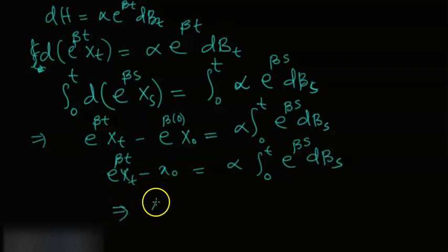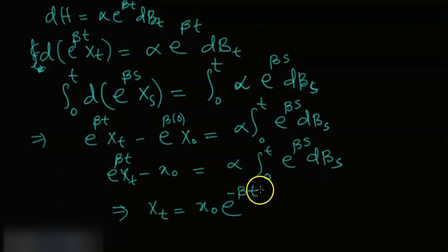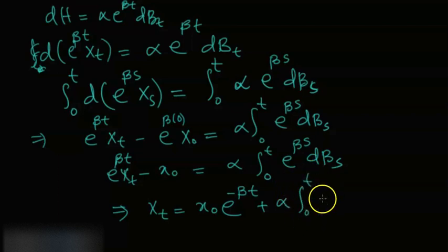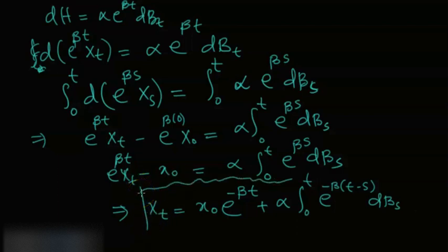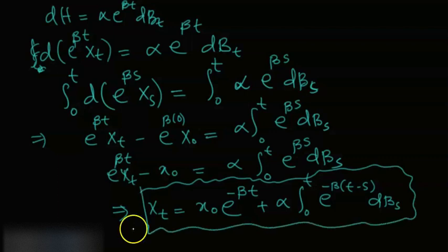Solving for X(t), we get the final solution: X(t) = X₀·e^(−βt) + α·∫₀ᵗ e^(−β(t−s))·dB(s). That is the solution to the Langevin stochastic differential equation using the generalized Itô lemma.